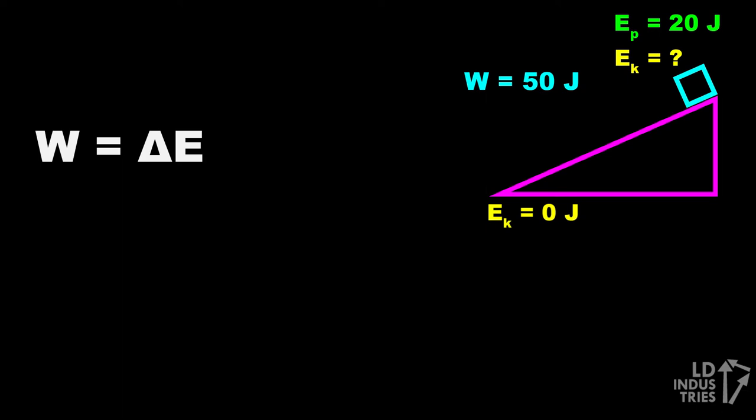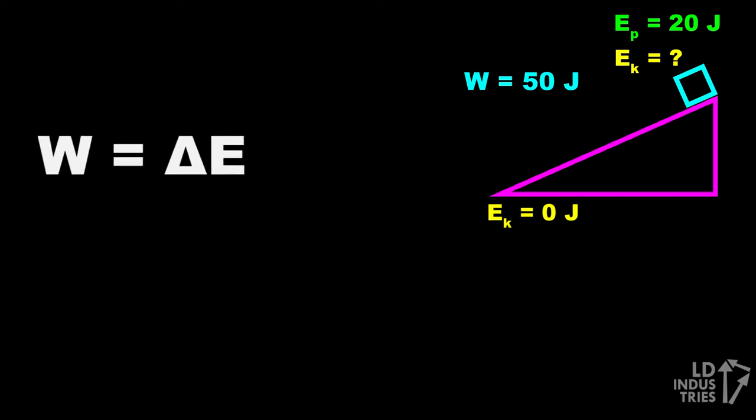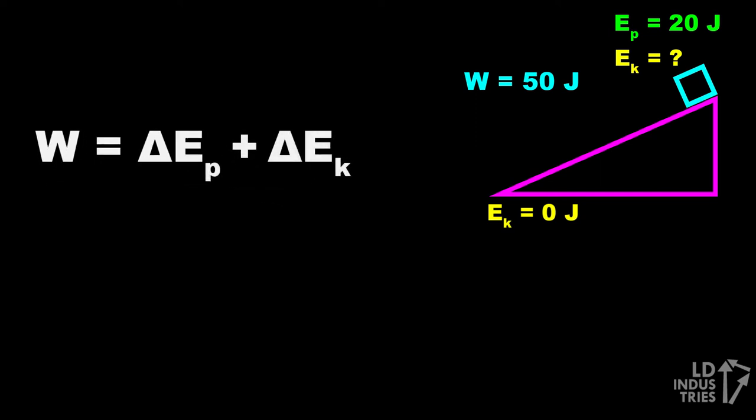So our work energy theorem is often written as work equals delta E. But I find it helpful to sometimes break that energy down into delta EP, the change in potential energy, plus delta EK, the change in kinetic energy, to make the energy a little easier to track.